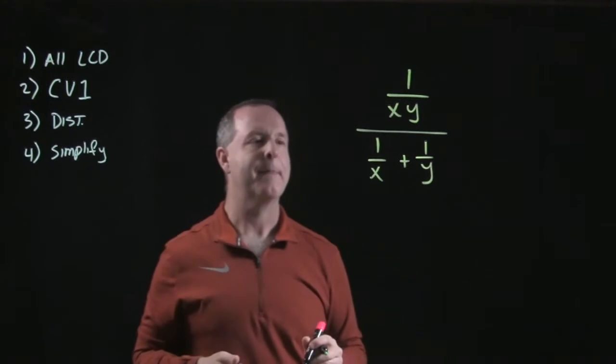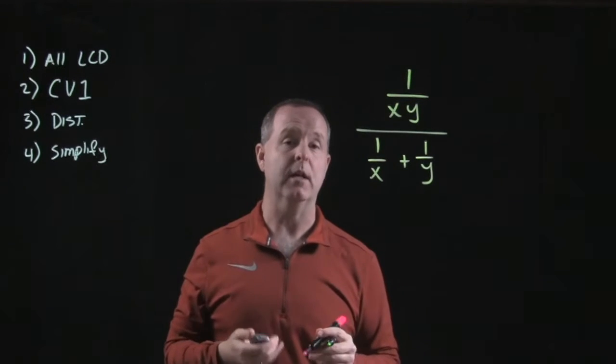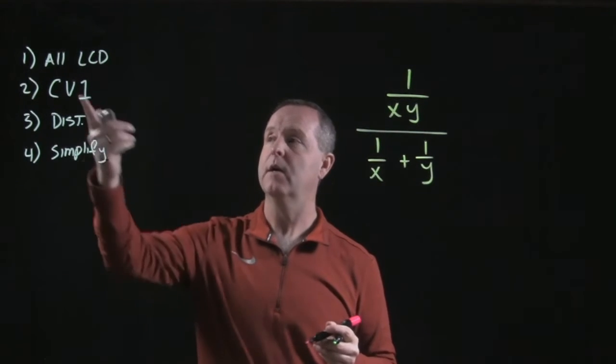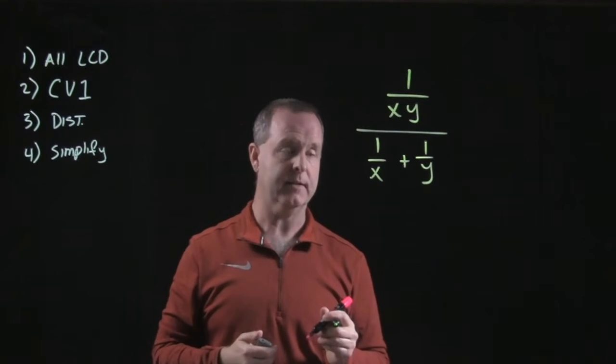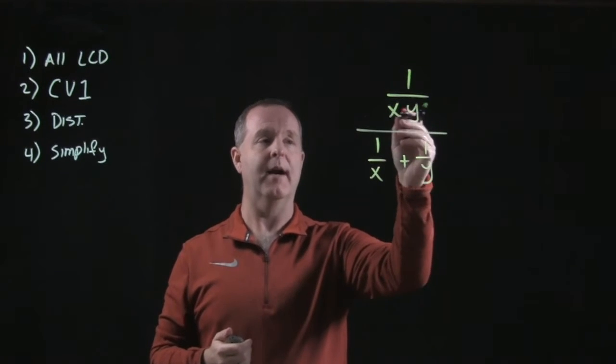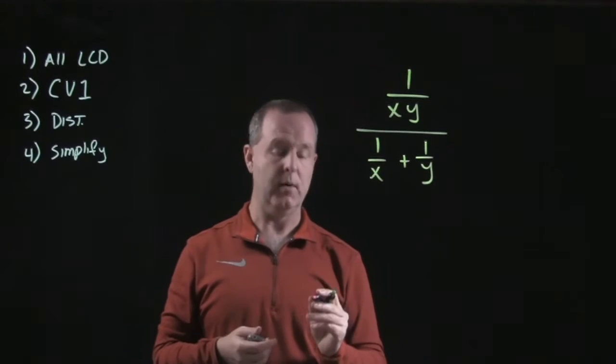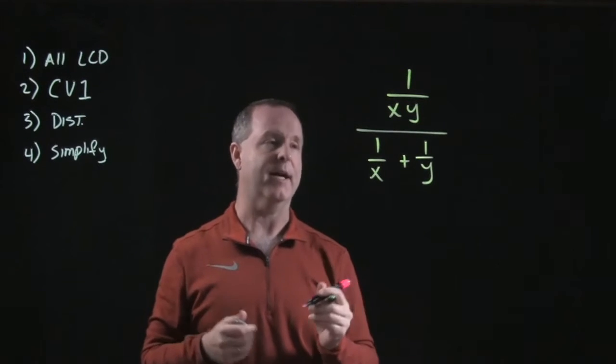Last example we're going to look at. Again, following this method, we're going to look for the lowest common denominator for all of the denominators. I have x over y, or x, y, x, and y. So my lowest common denominator is xy.